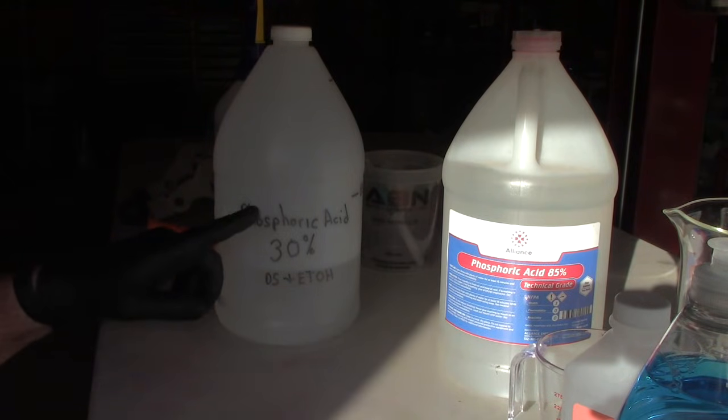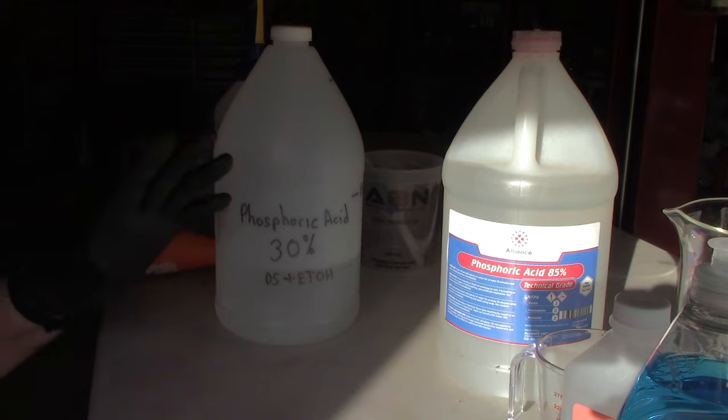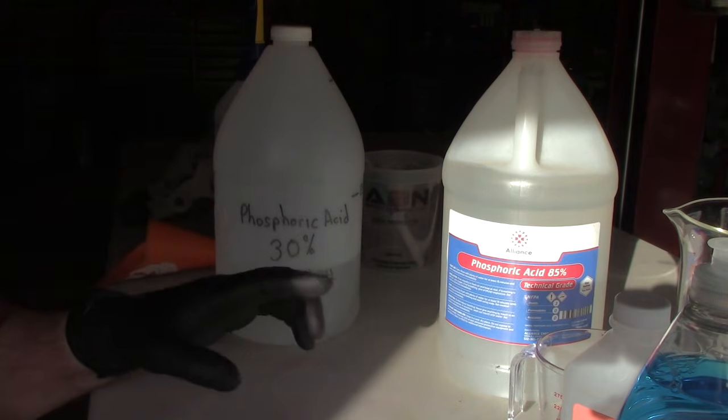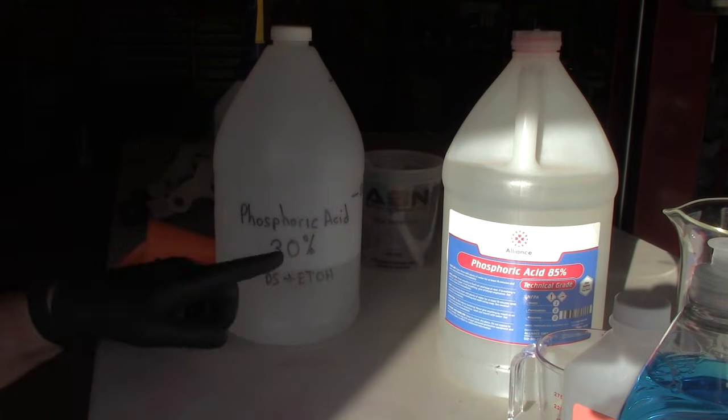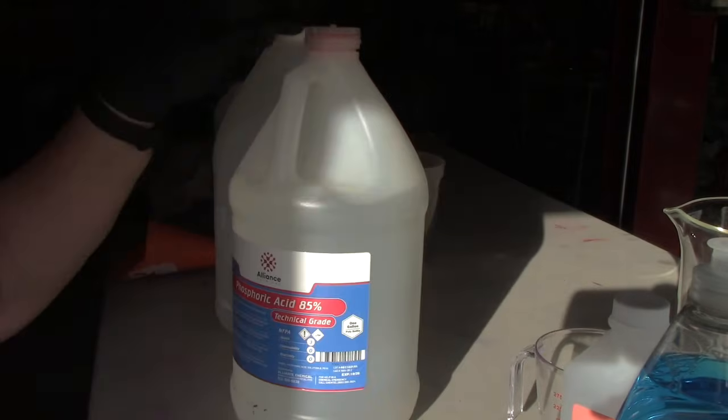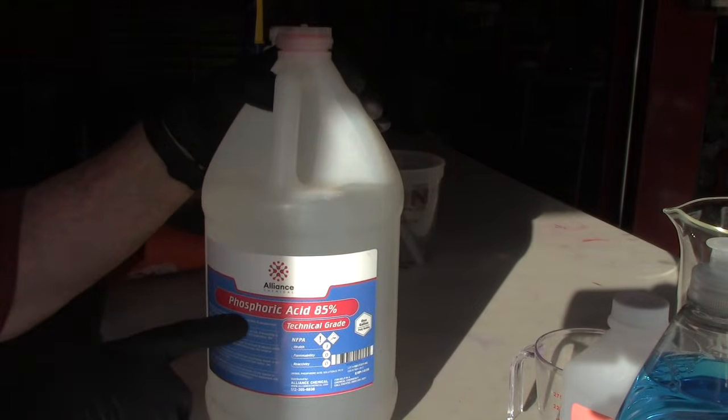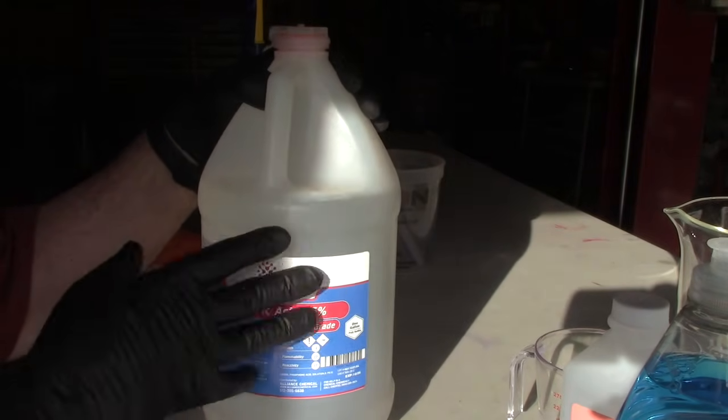You can buy phosphoric acid at pretty much any concentration you want, 25 to 30 percent, and then the first step I'm going to show you, you won't have to do. But I like to buy it more concentrated. I've got the 85 percent here, it lasts a lot longer.